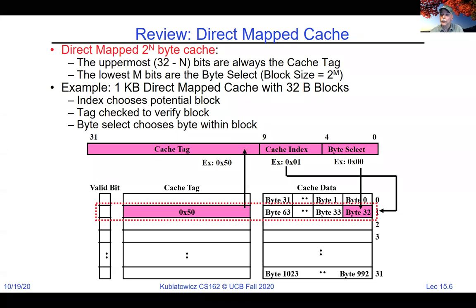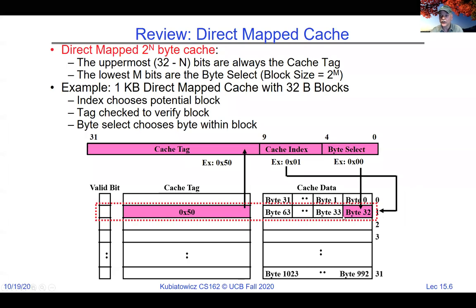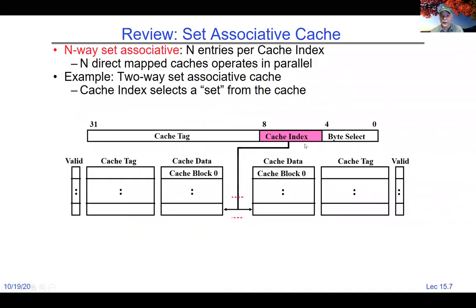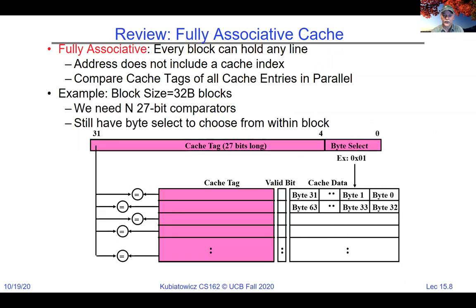Direct-mapped is faster, but there's something interesting about it: a huge number of addresses — with the tag taking 20 bits, that's about a million addresses — all map to the same cache line. If you access any of them, you get a conflict miss. With two-way set-associative there are two places to put it, so fewer conflicts. With fully associative you can put it anywhere, so basically no conflict misses. So while fully associative is slower, it has fewer conflicts.